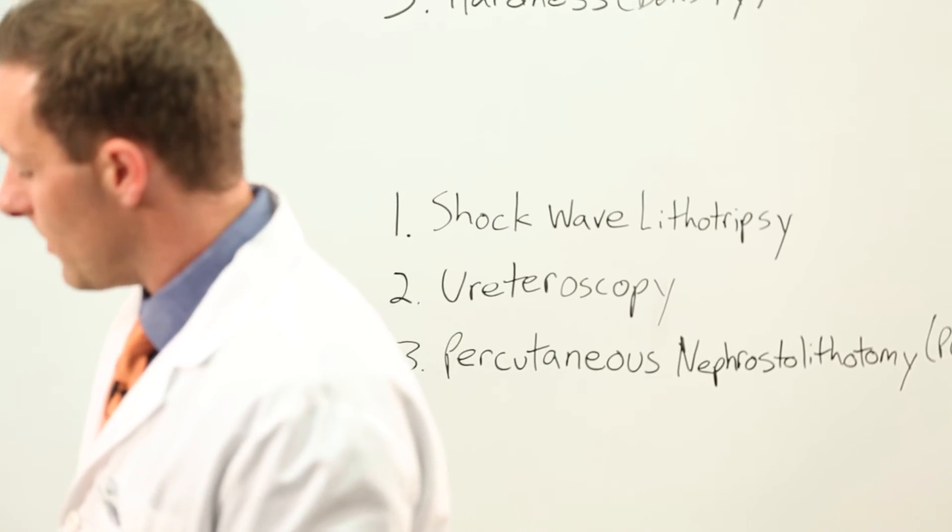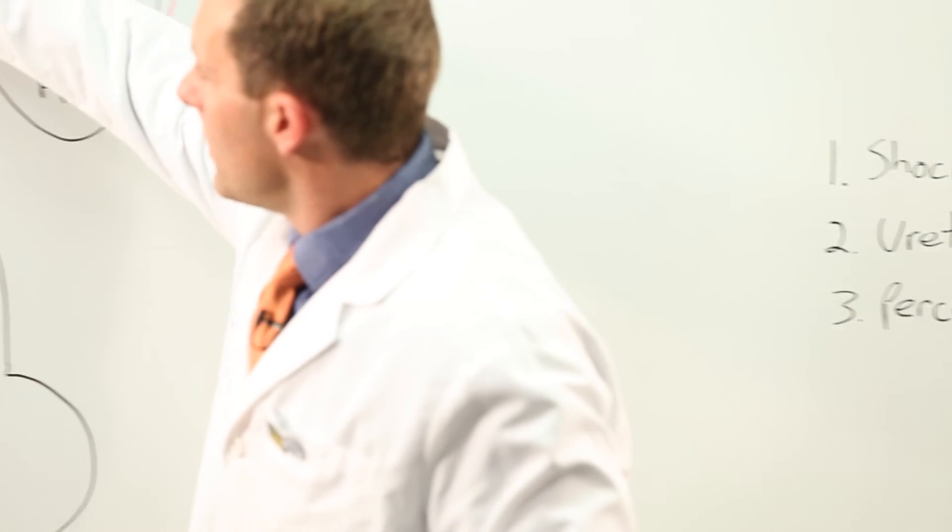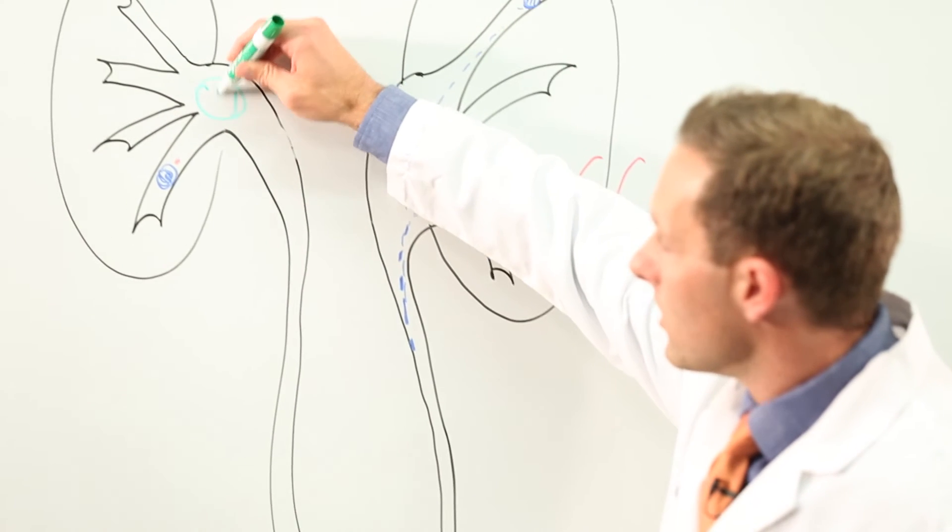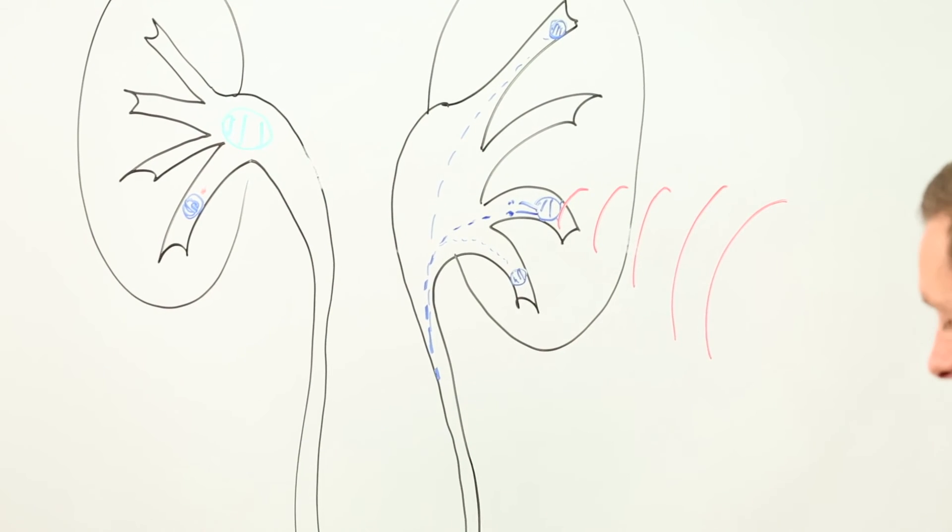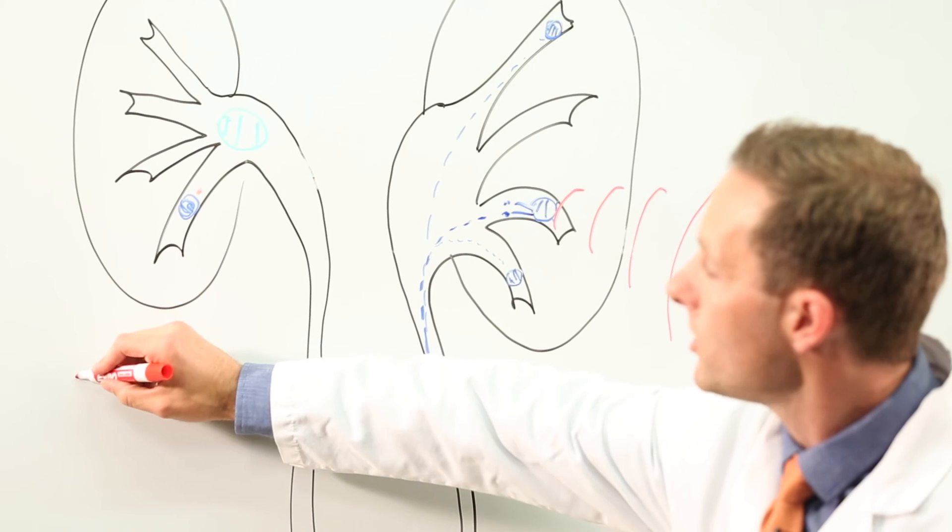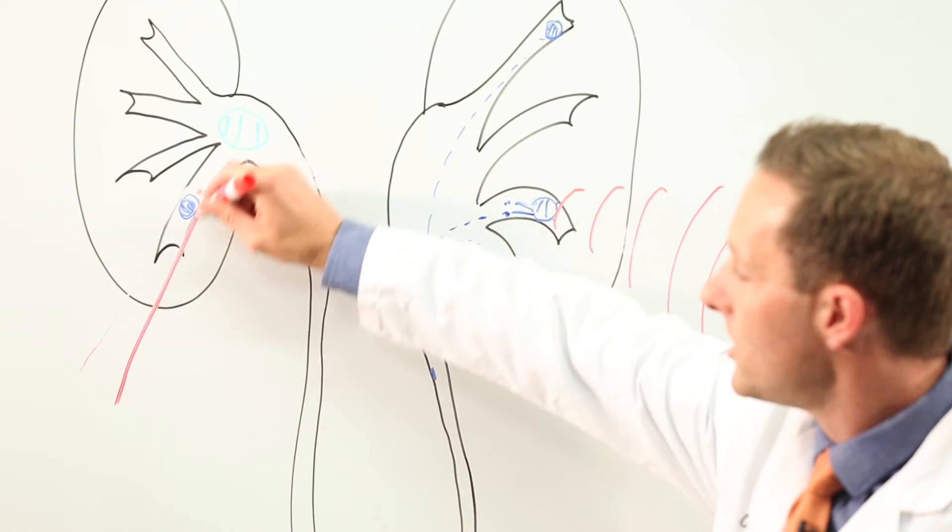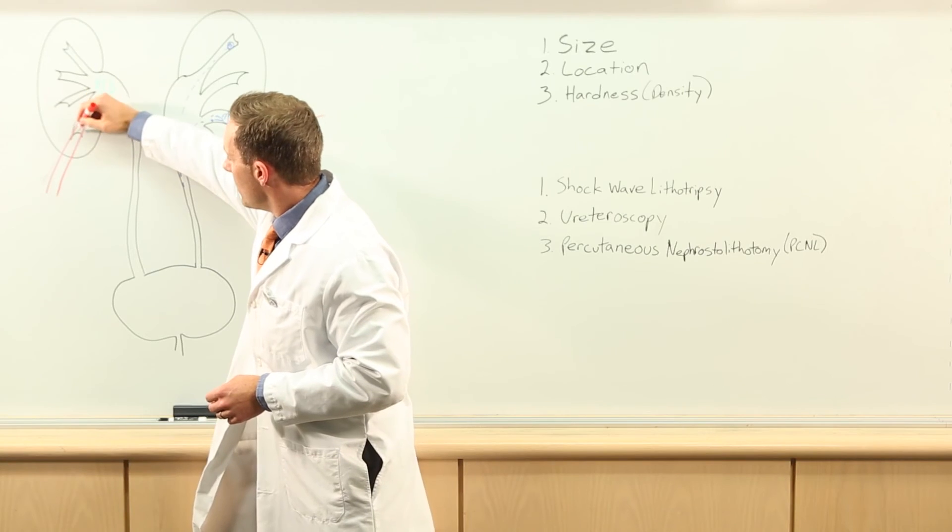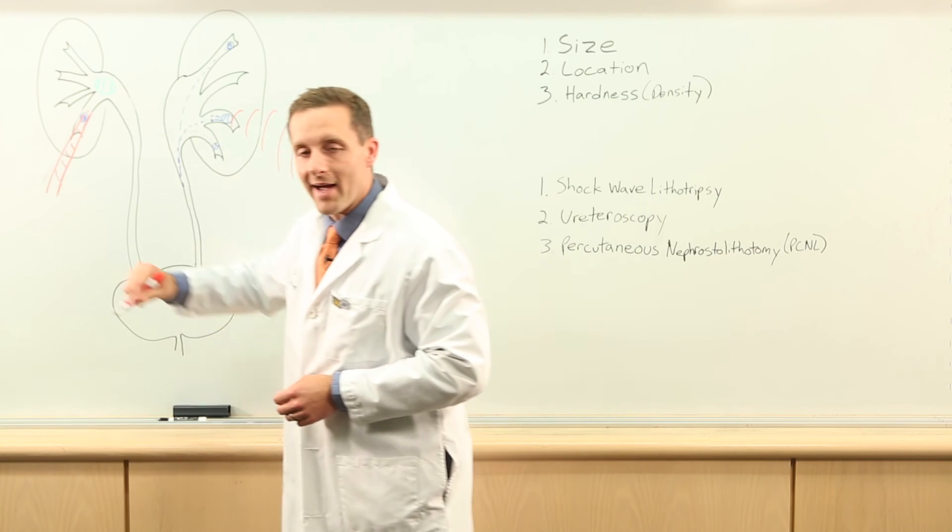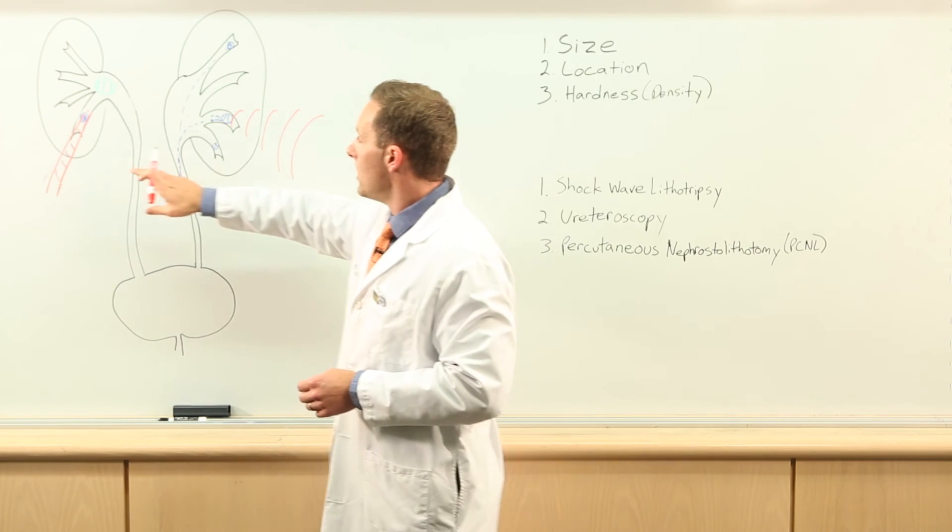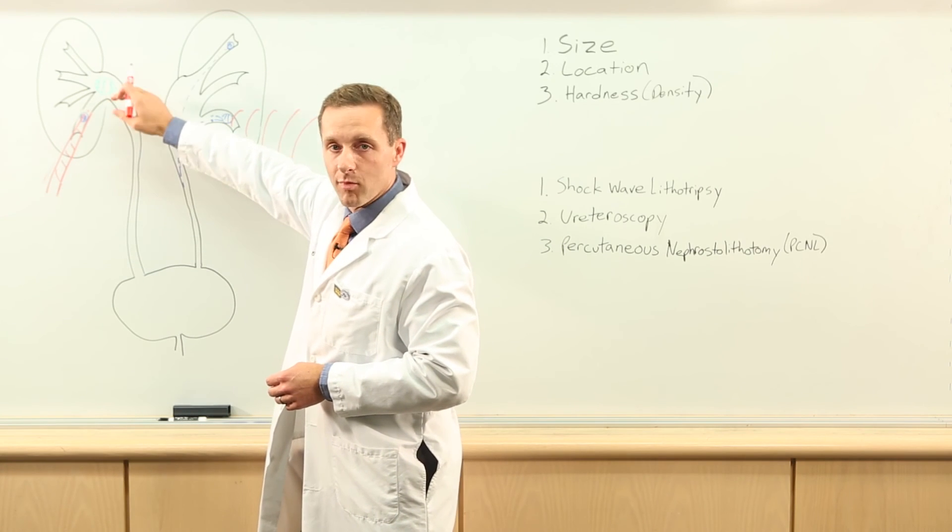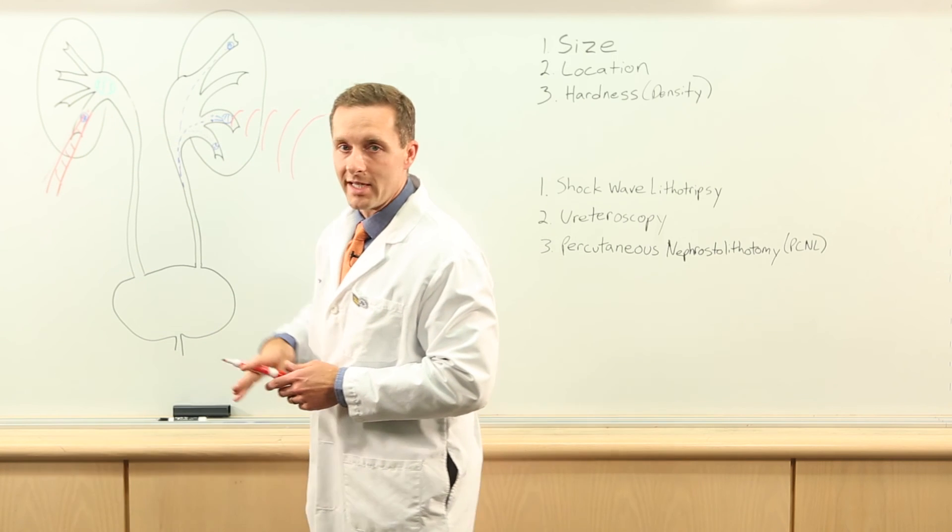The last type of treatment for kidney stones is generally used for large kidney stones. This type of treatment requires placement of a small tube into the patient's back. Then through that tube we can pass specialized instruments up into the kidney that allow us to break it up and remove the pieces with suction.